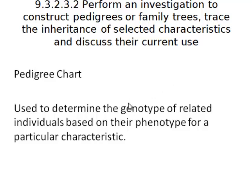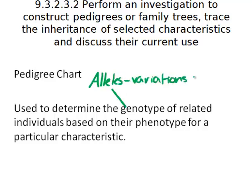The word genotype refers to the genes that are present and we can't see them. Our genotypes are made up of alleles, which are variations of a gene. In general terms, a lot of the work that Mendel was doing looked at there being dominant and recessive alleles.